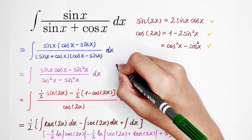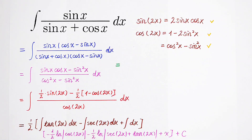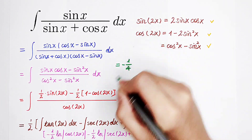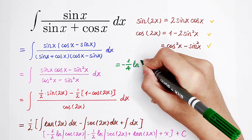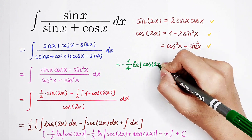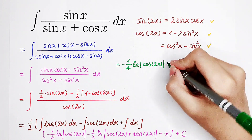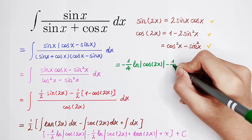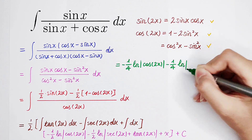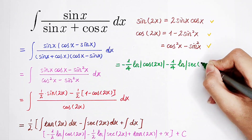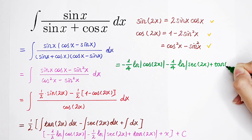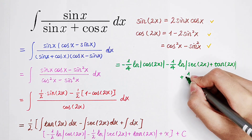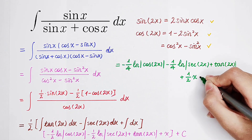So the final answer, written smaller: a half times negative 1 over 2 is negative 1 over 4. Negative one fourth times the natural log of the absolute value of cosine of 2x. And then minus 1 half times 1 half, so minus one fourth times the natural log of the absolute value of secant of 2x, then plus tangent of 2x. And then plus 1 half x, and then plus c.